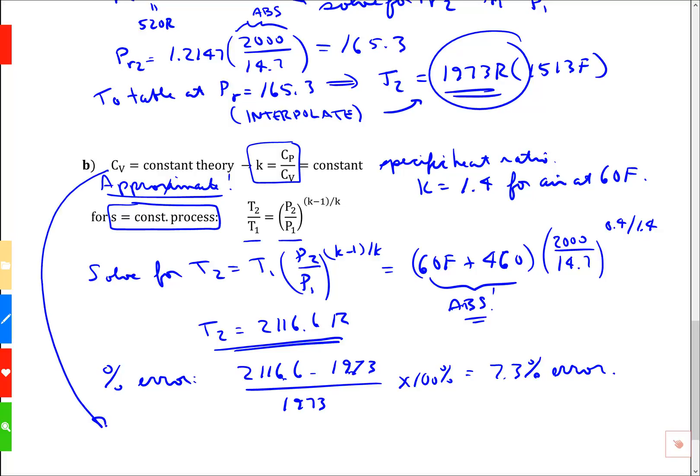Why would an engineer be interested in a large error? Well, this theory, we can compute this without a table. So that's an advantage. And it gives the correct trend. Sometimes engineers need the trend more than they need an accurate final value. We'll call this a quick and dirty method.